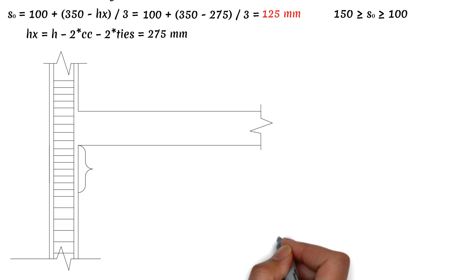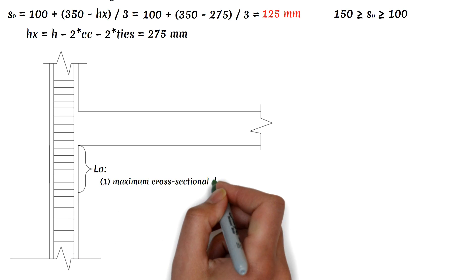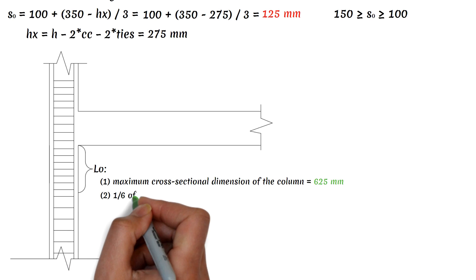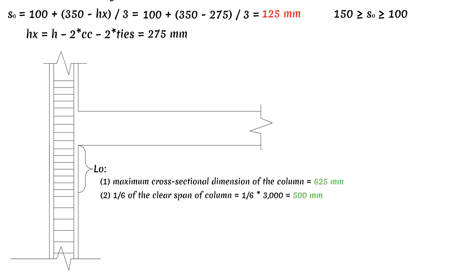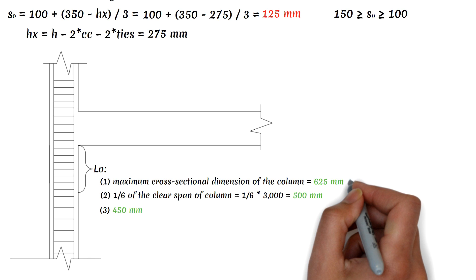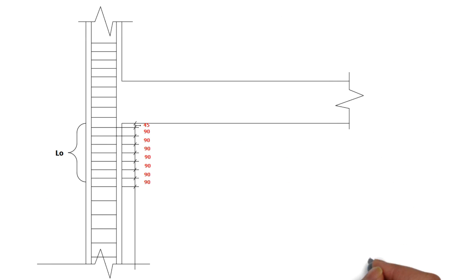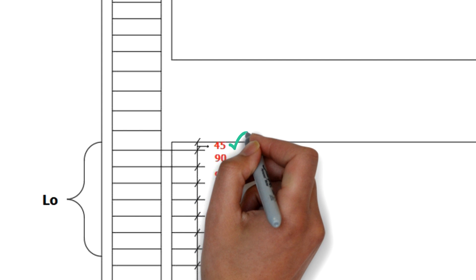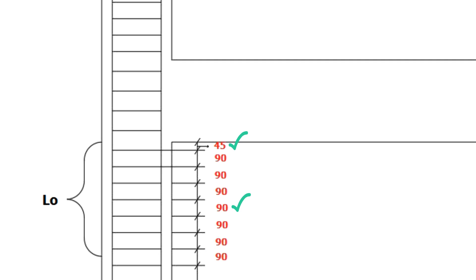This 90 mm spacing shall be applied over length L0. Length L0 shall be at least the largest of: the maximum cross-sectional dimension of the column (625 mm), one-sixth of the clear span length (500 mm), or 450 mm. We choose L0 as 625 mm. The first hoop shall not exceed one-half of the smallest spacing obtained — that is, one-half of 90 mm, giving 45 mm — and from that point up to L0 (625 mm), the spacing is 90 mm.